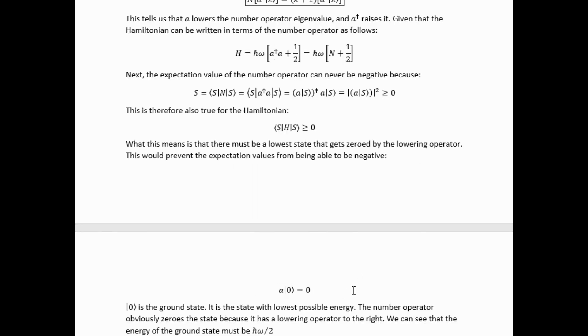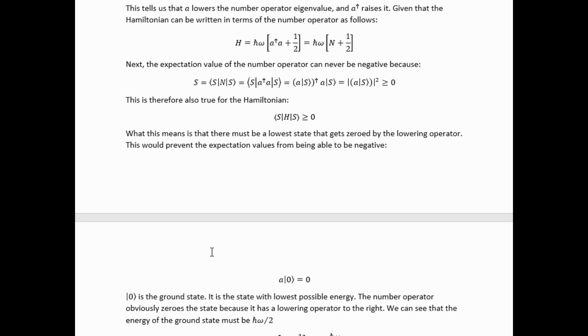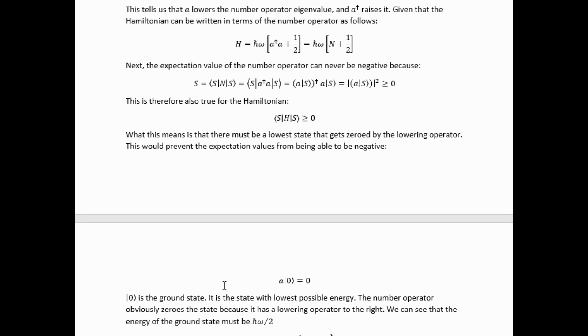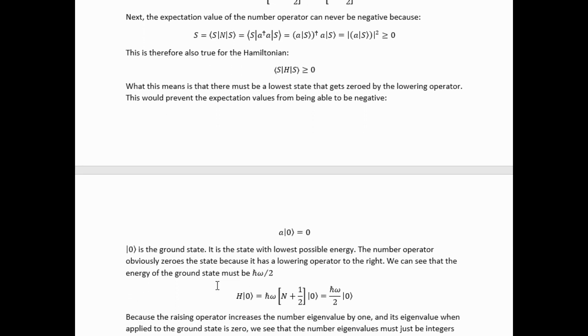We see also that in addition to this, in order for this to never go below zero, all allowed states must necessarily have integer number operator eigenvalues. Otherwise you could start with that state that did not have an integer number operator eigenvalue and lower it down to a state that was below zero because it would skip over the state that is zeroed by the lowering operator. So we see that if we figure out a way to construct sensible normalized states by just applying the raising operator to the vacuum, we necessarily cover every allowed state of the system.